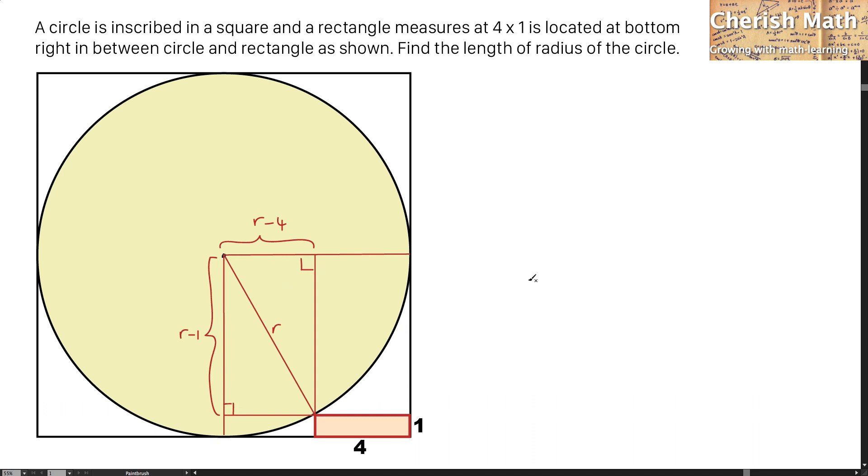And now I'm going to use the Pythagorean theorem to solve the problem. That would be r squared equals r minus 1 squared plus r minus 4 squared. Let me expand and add up the right side of this equation.